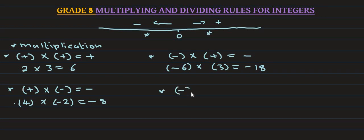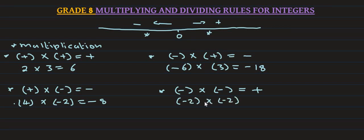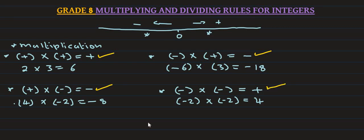We multiply negative 1, and the answer is positive. For negative 2 multiplied by negative 2: negative times negative is positive, and 2 times 2 equals 4. Positive times positive gives positive; positive times negative gives negative; negative times positive gives negative; negative times negative gives positive. That is the multiplication rule.